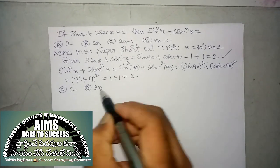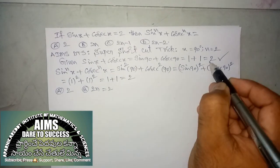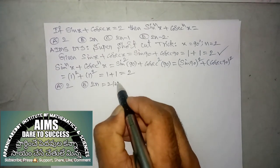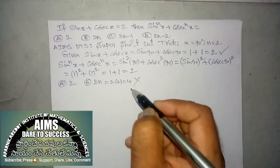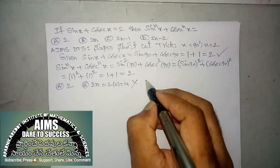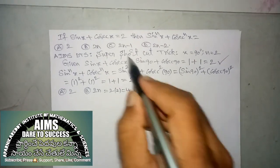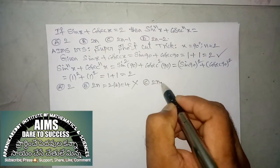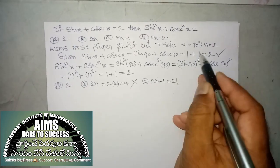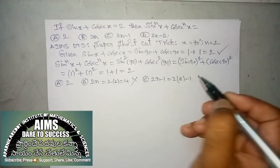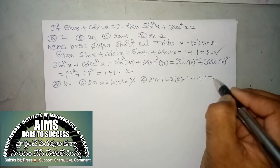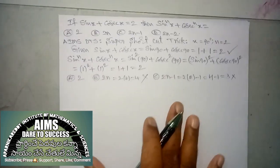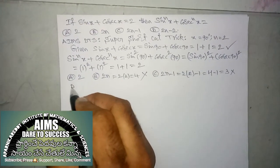So, option B is 2n is equal to 2 into n value 2, 2 to 0, 4. It is not matching to that question. So, wrong answer. Next option C, 2 into n minus 1. n value is 2. So, 2 into 2 minus 1. 2 to 0, 4 minus 1 is 3. It is also not matching option C also wrong.